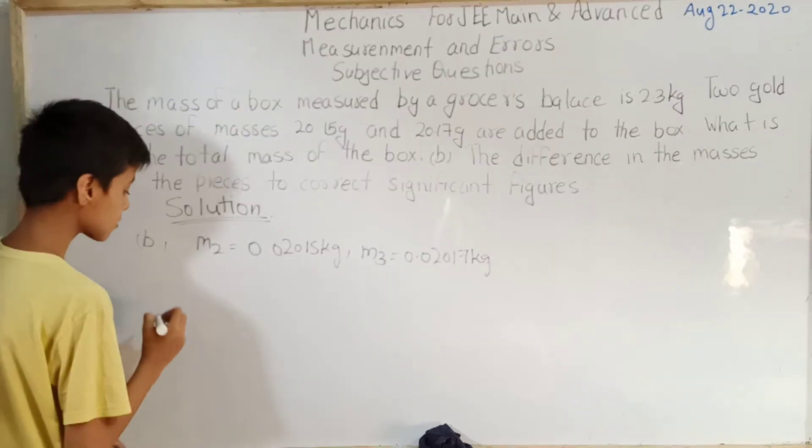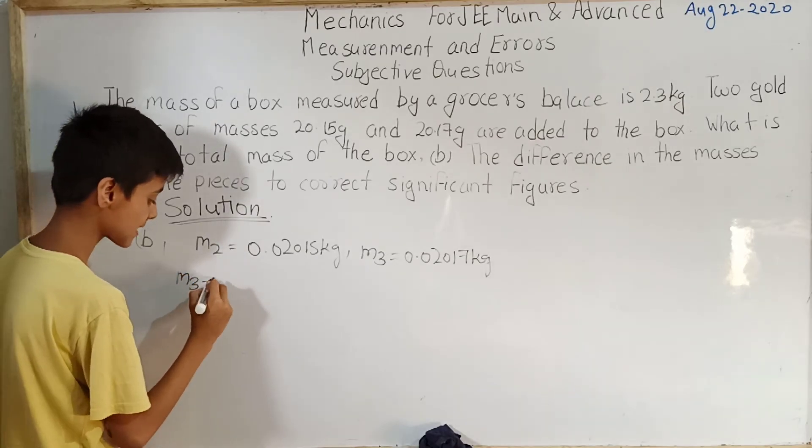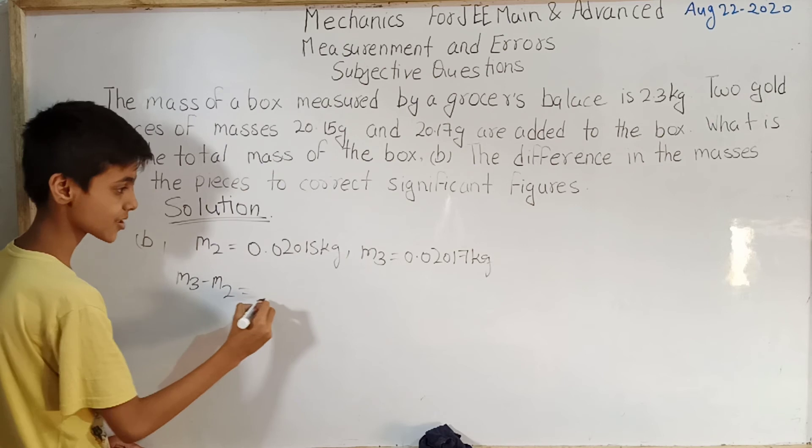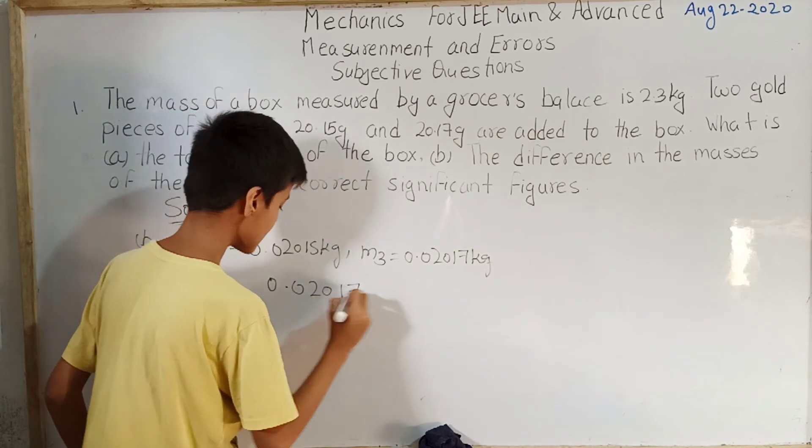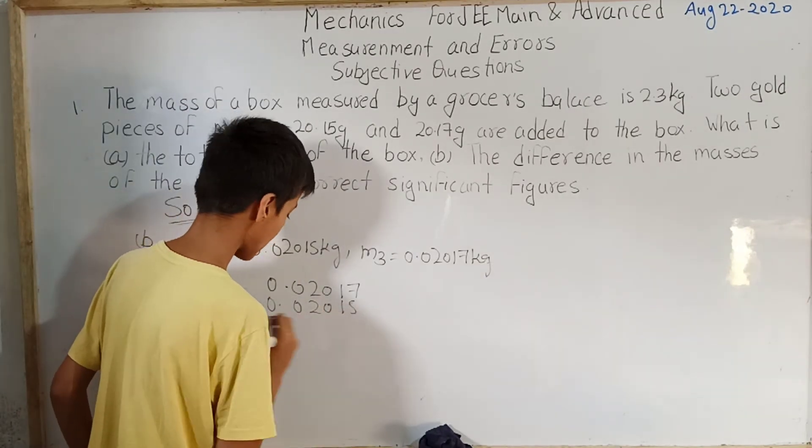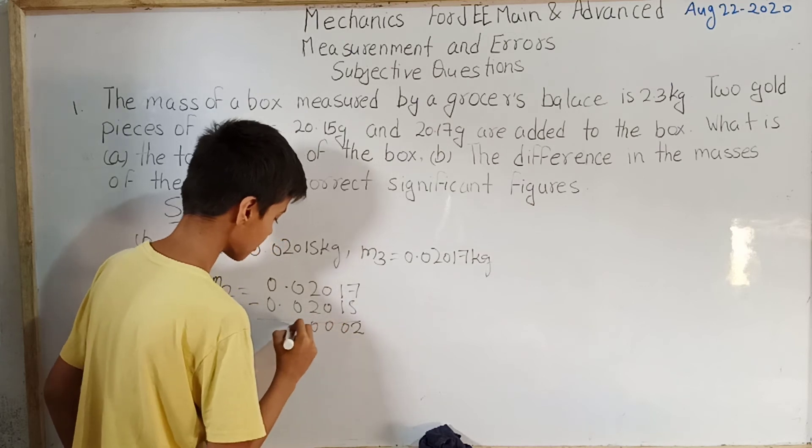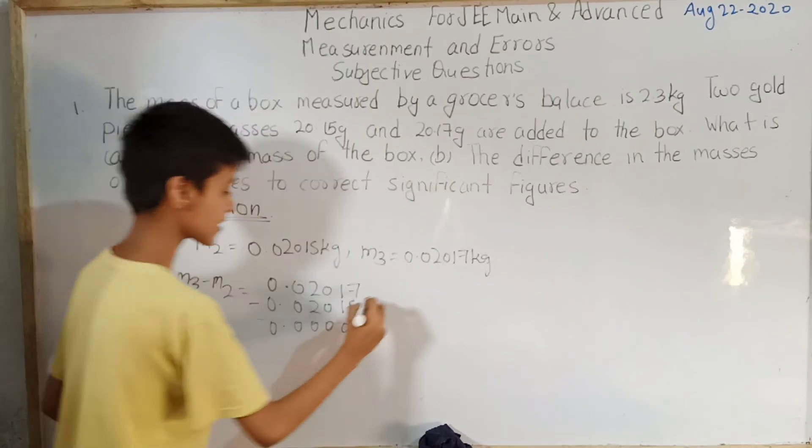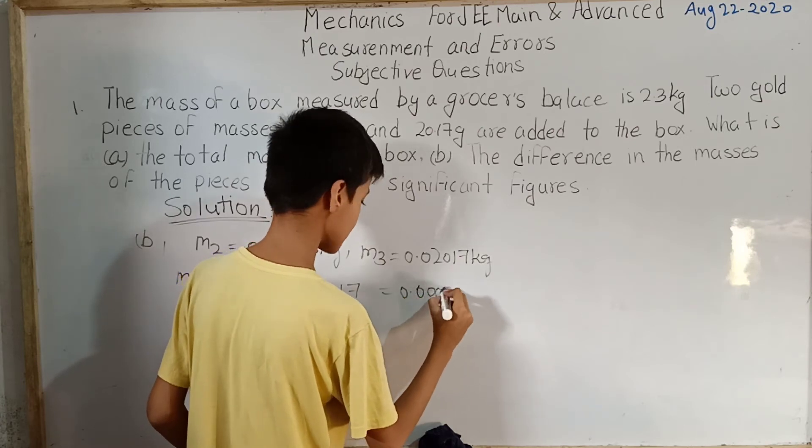So for solving this we have m3 minus m2, which equals to 0.02017 minus 0.02015. Now 7 minus 5 is 2, which equals to 0.00002 kg.